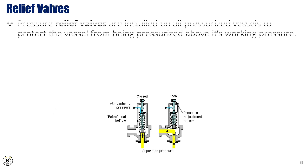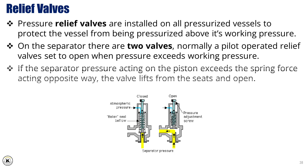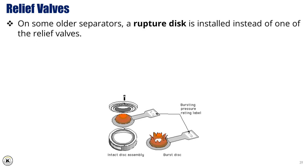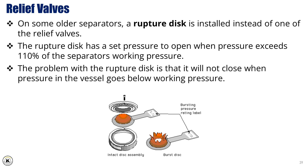Pressure relief valves are installed on all pressurized vessels to protect the vessel from being pressurized above its working pressure. On the separator there are two valves — normally a pilot-operated relief valve set to open when pressure exceeds working pressure. If the separator pressure acting on the piston exceeds the spring force acting the opposite way, the valve lifts from its seat and opens. On some older separators, a rupture disc is installed instead of one of the relief valves; the rupture disc has a set pressure to open when pressure exceeds 110% of the separator's working pressure. The problem with the rupture disc is that it will not close when pressure in the vessel goes below working pressure.